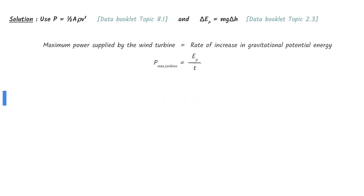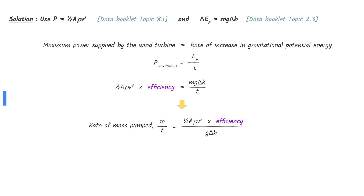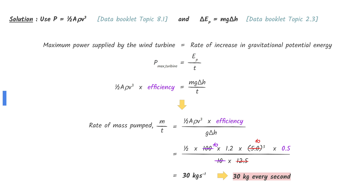The maximum power supplied by the wind turbine equals the rate of increase in gravitational potential energy. The rate of increase in gravitational potential energy is the potential energy divided by time. The maximum power supplied must also be multiplied by the efficiency since only 50% of the power generated is transferred to the pump. Rearrange the equation to make the rate of mass pumped the subject. Leaving calculations to the very end can simplify the process — 100 divided by 10 gives 10, and 5 cubed, which is 125, divided by 12.5 gives 10. We get 30 kilograms per second.